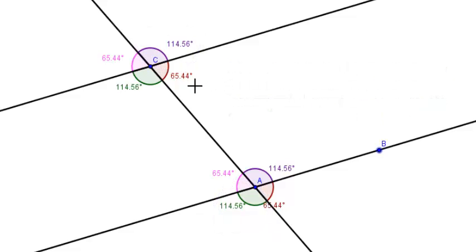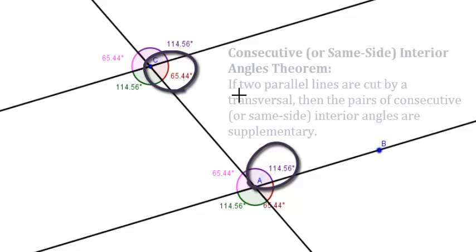Now, how about same side interior angles or consecutive interior angles? These guys aren't congruent, but again, through things like the linear pair postulate and the vertical angles congruence theorem, we can see that these guys are, in fact, supplementary.